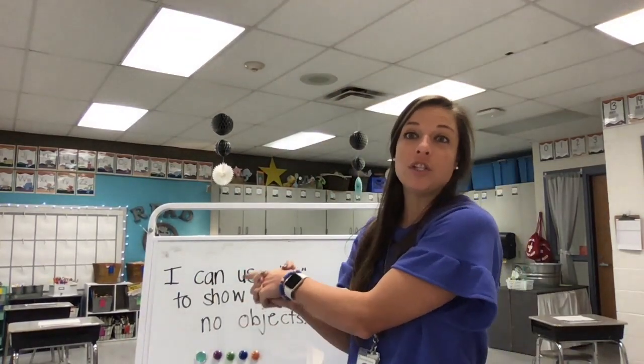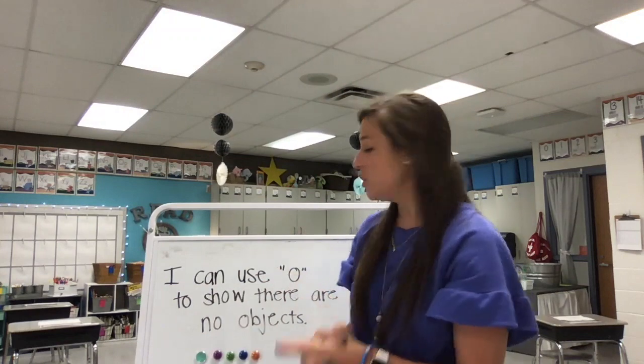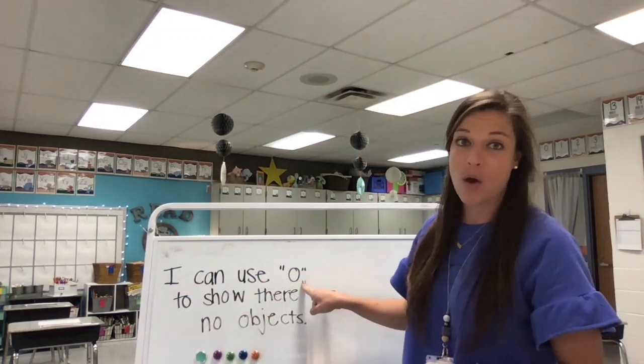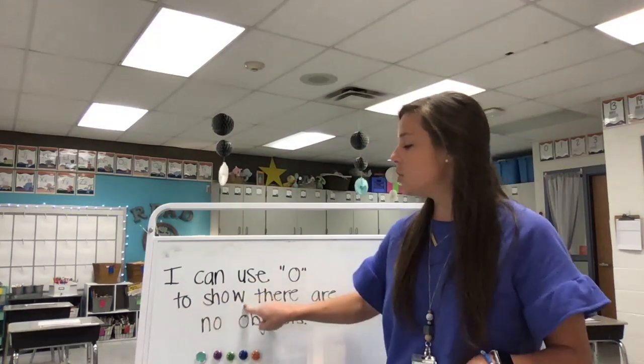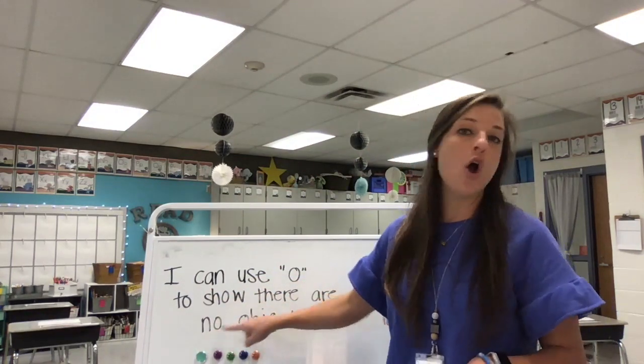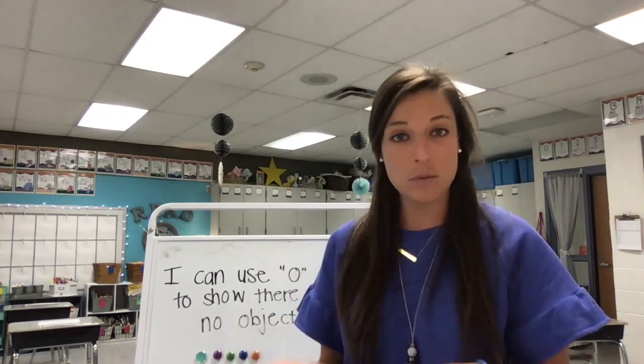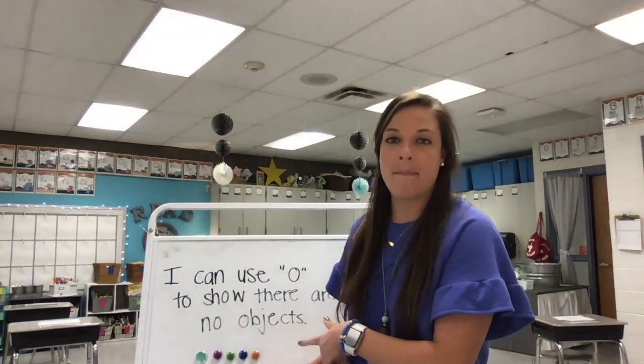This is our learning target for today. Our learning target says, I can use zero, which is a number, to show there are no objects. Today we are going to practice counting and showing the number of boxes to match, like we've done before. But we're gonna see that there are some groups that have zero, nothing at all.